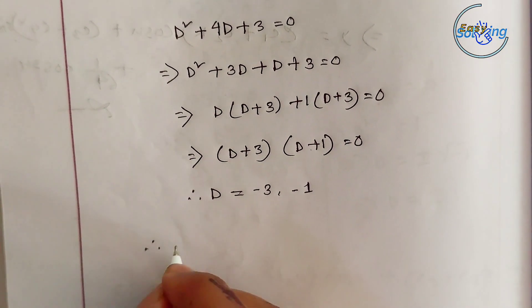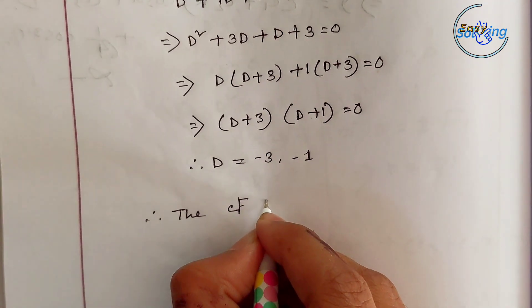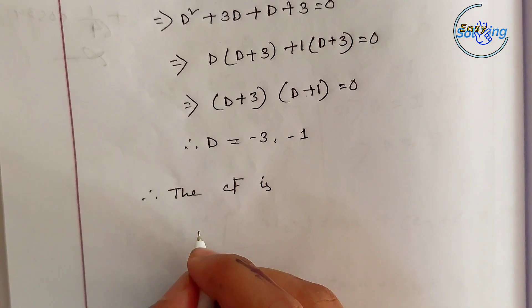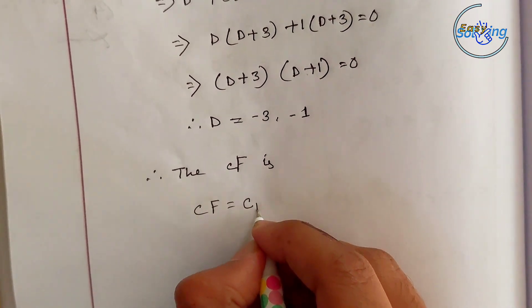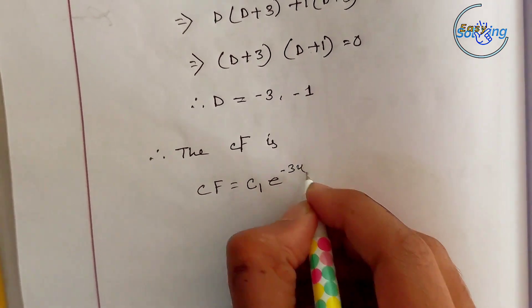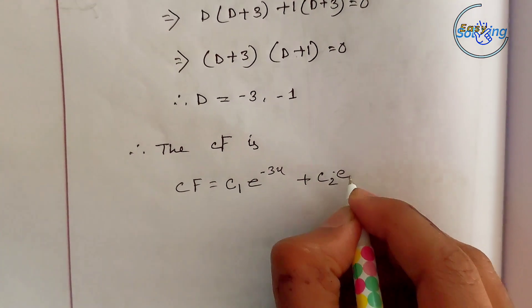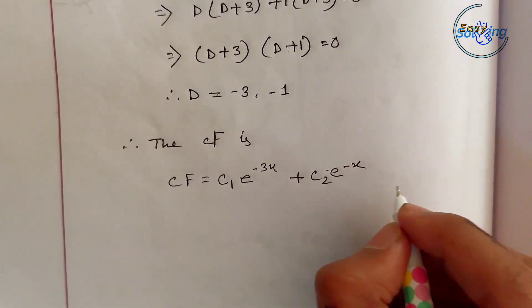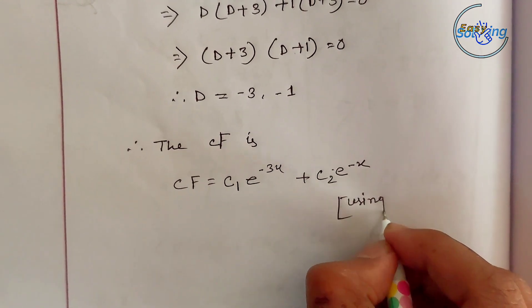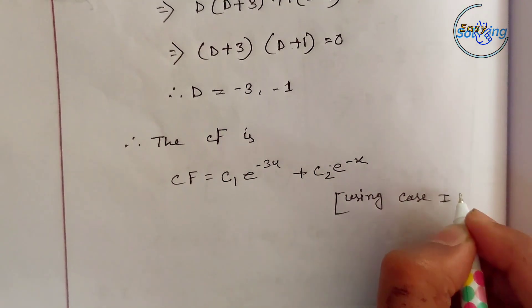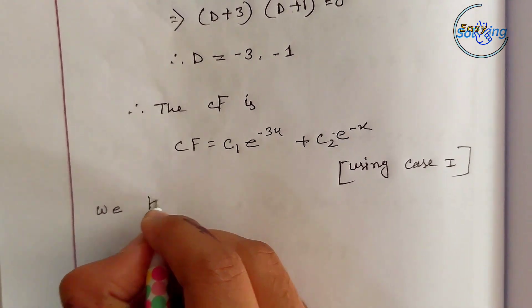The complementary function (CF) is: CF equals C1 times e to the power minus x plus C2 times e to the power minus 3x.